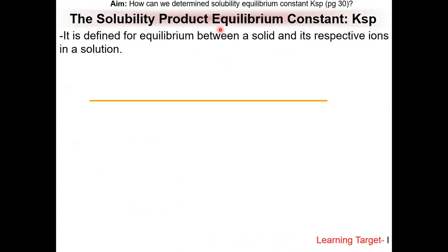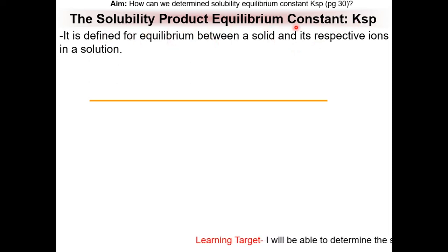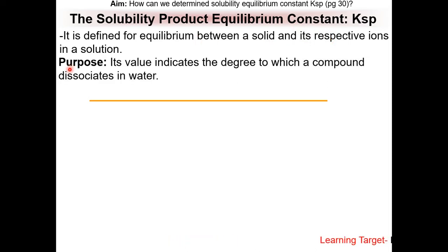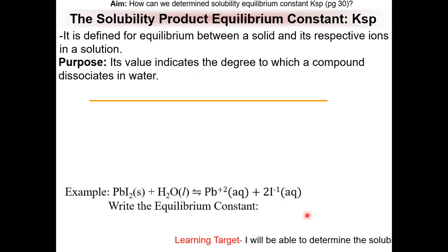The solubility product equilibrium constant, or Ksp: S stands for solubility, P stands for product, and K is the equilibrium constant. It is defined for equilibrium between a solid and its respective ions in a solution. The purpose of Ksp is that its value indicates the degree to which a compound dissociates in water — basically, how well an ionic compound dissolves in water.